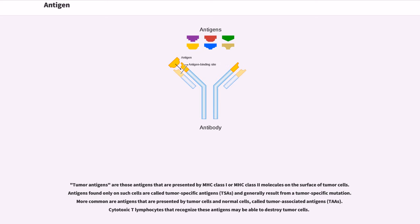Tumor antigens are those antigens that are presented by MHC class I or MHC class II molecules on the surface of tumor cells. Antigens found only on such cells are called tumor-specific antigens, TSAs, and generally result from a tumor-specific mutation. More common are antigens that are presented by tumor cells and normal cells, called tumor-associated antigens, TAAs.